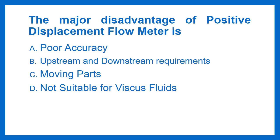The major disadvantage of positive displacement flow meter is: Option A - Poor Accuracy, Option B - Upstream and downstream requirements, Option C - Moving Parts, Option D - Not suitable for viscous fluids. The answer is Option C: Moving Parts.